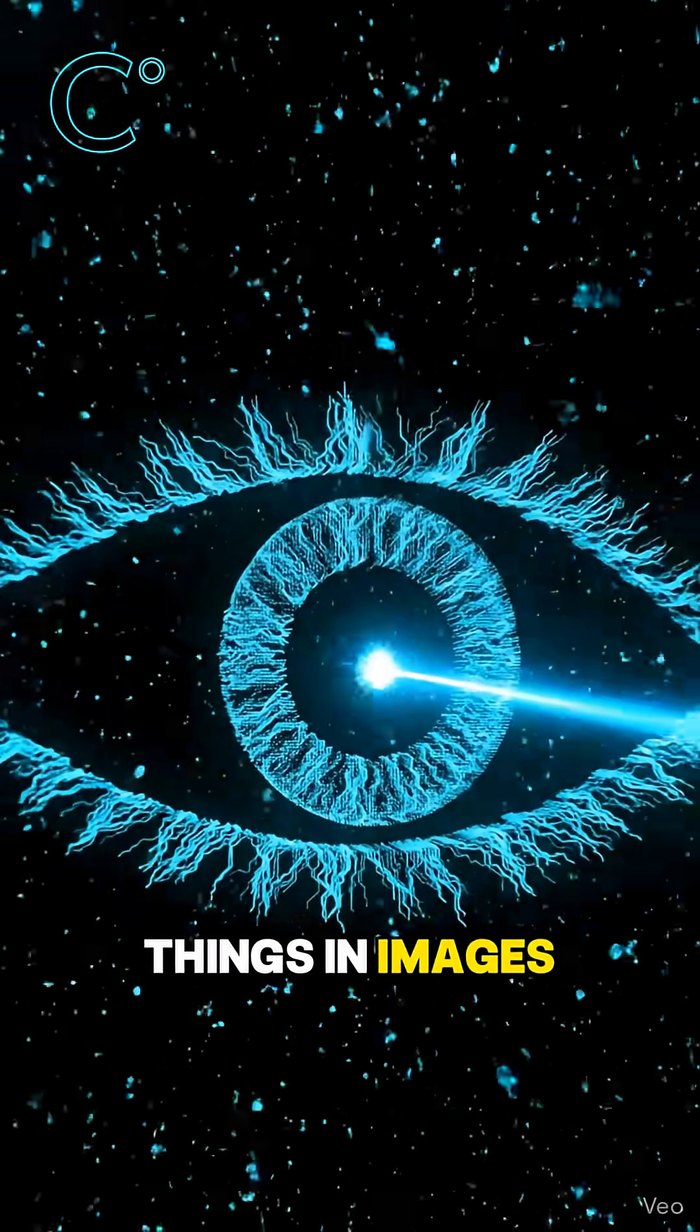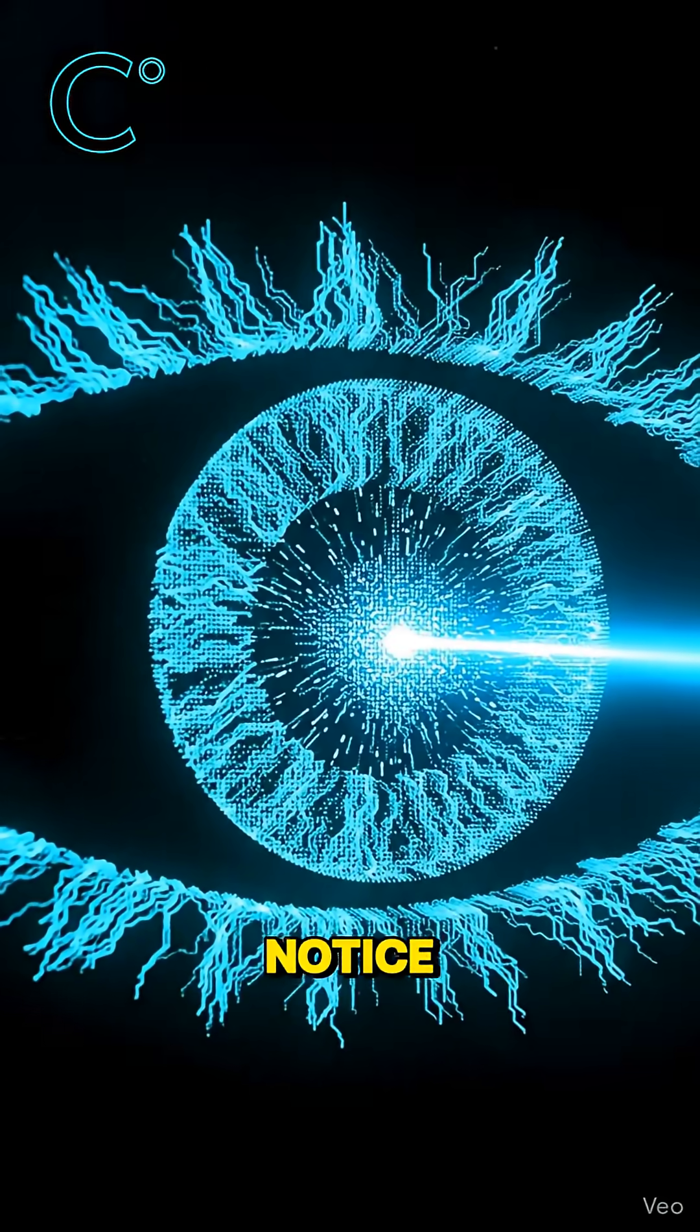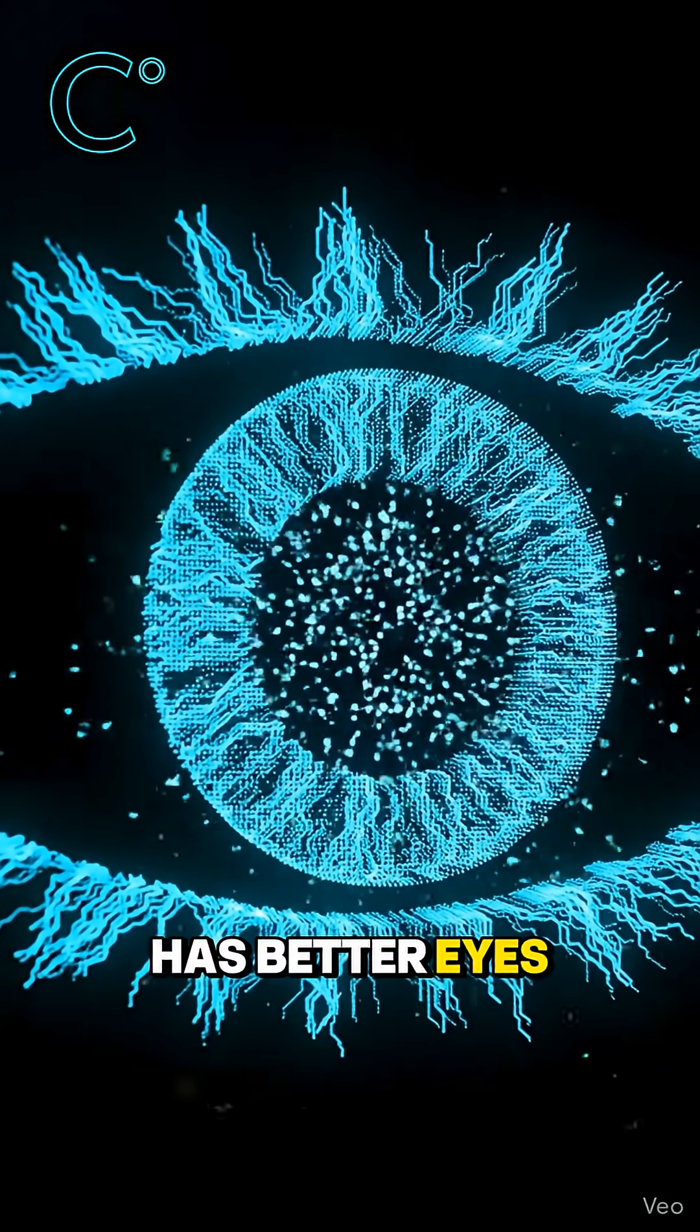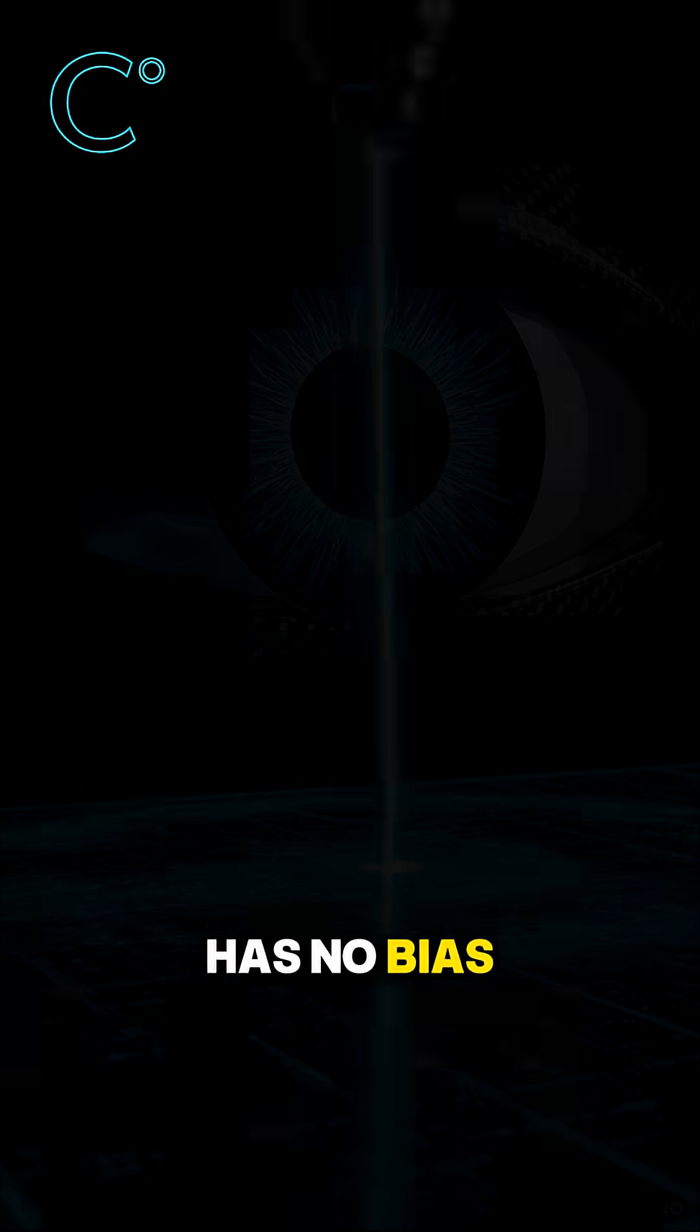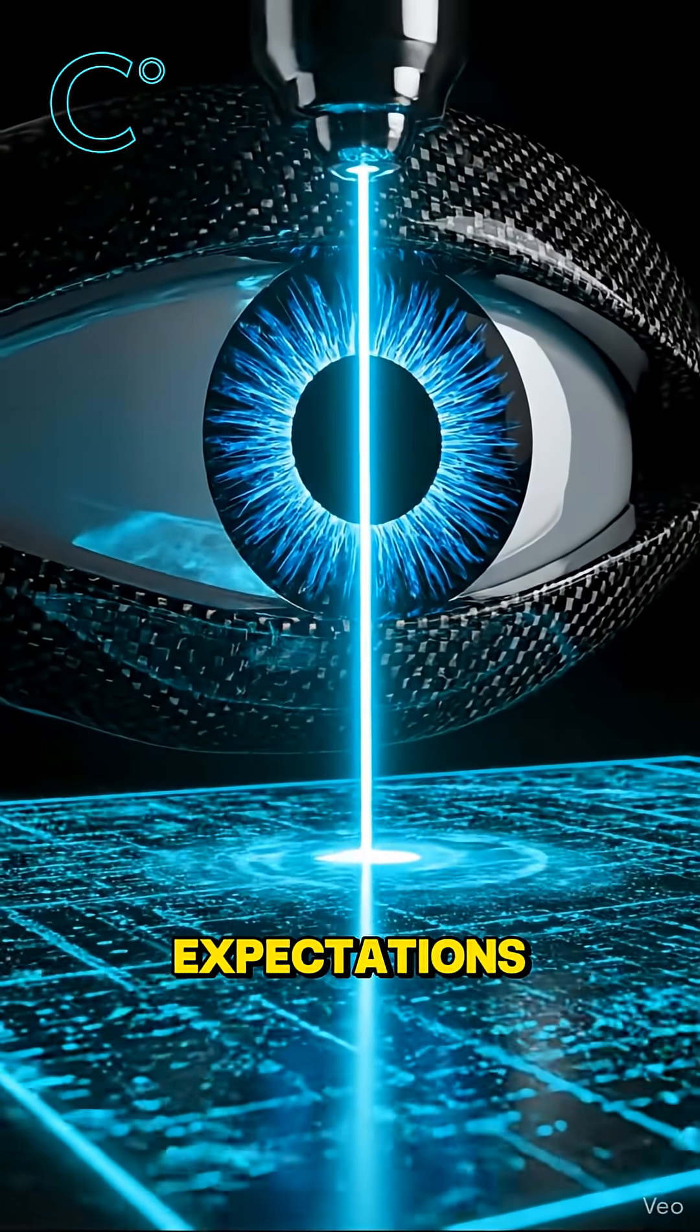AI can see things in images that humans never notice. Not because it has better eyes, but because it has no bias, no memory, no expectations.